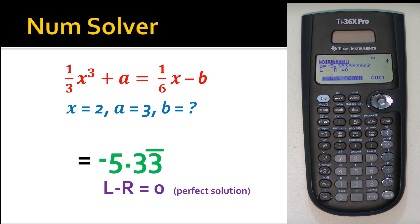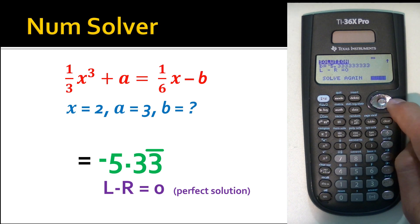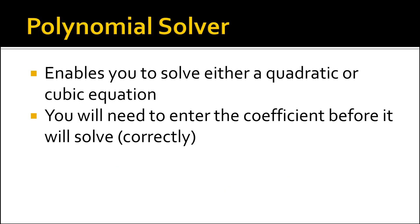There's a value here called L minus R, meaning left minus right. If there's even a slight difference the calculator can perceive — it solves internally to about 32 decimal places — it would show that here. But it shows zero, meaning this is a perfect answer: no difference between the left and right sides with the values provided. Arrow over to Quit to exit.